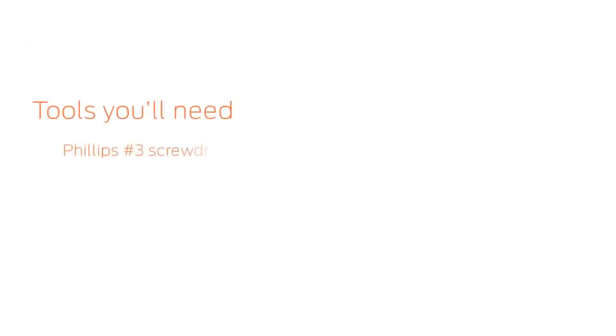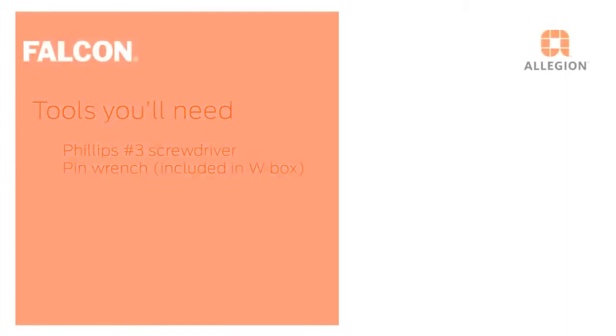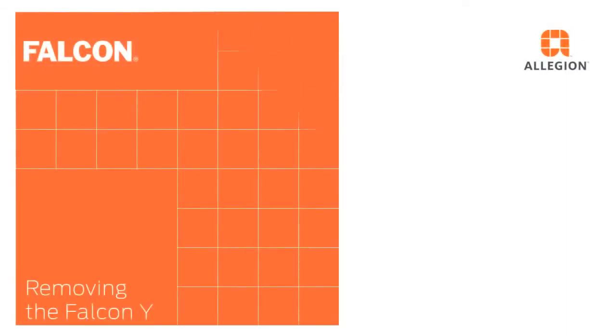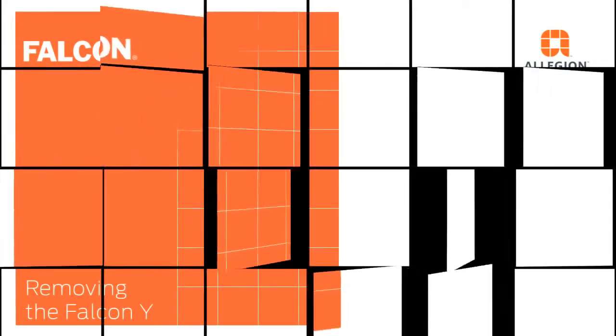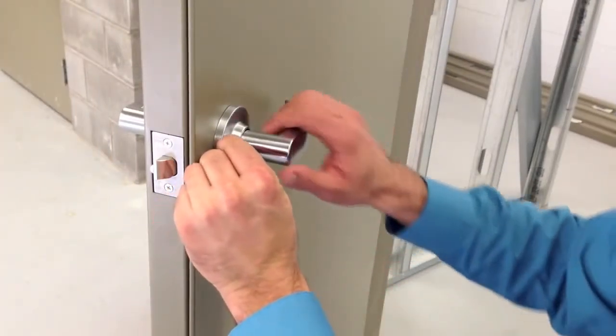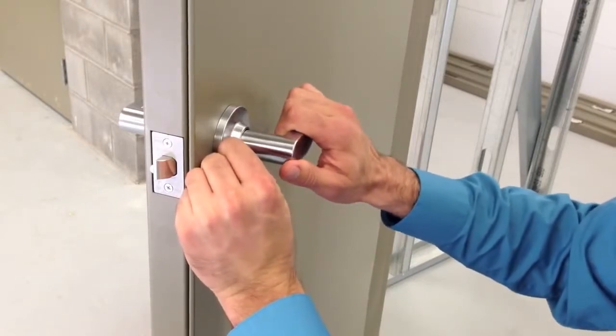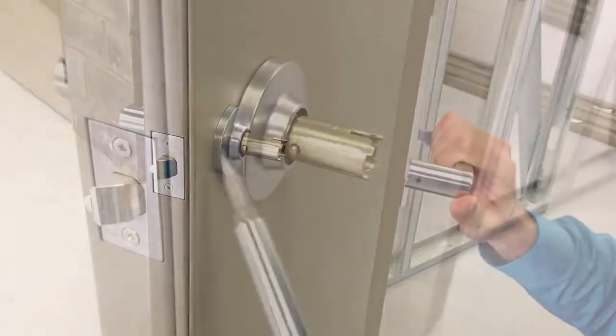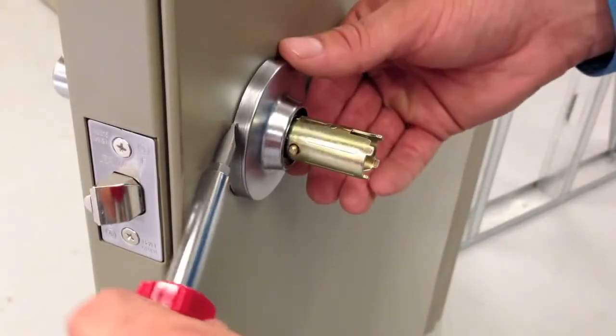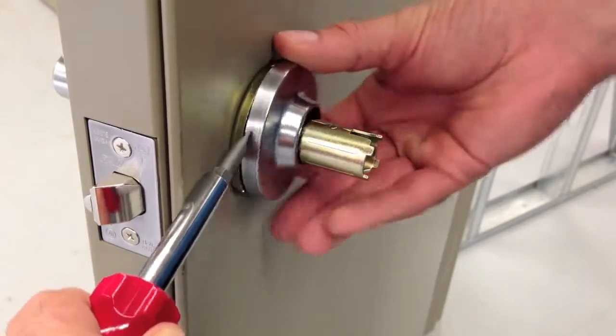These are the tools you will need. Using the pin wrench from the W box, remove the inside lever. Insert the screwdriver into the notch of the inside rose and gently pry it off.